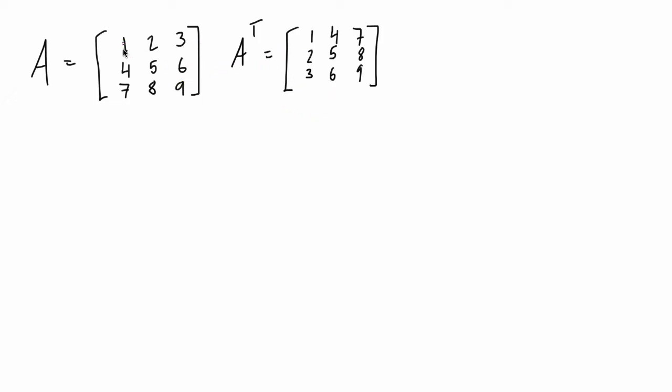So you can kind of look at it either way. Other people interpret this as flipping the matrix across the main diagonal, which totally works and it works for non-square matrices as well. It's just I prefer to think about just interchanging rows with columns.